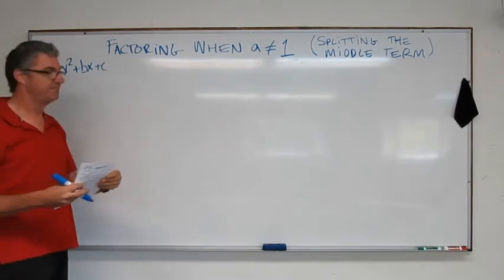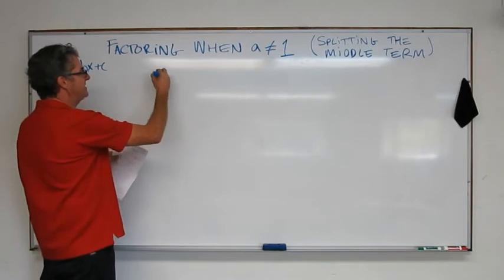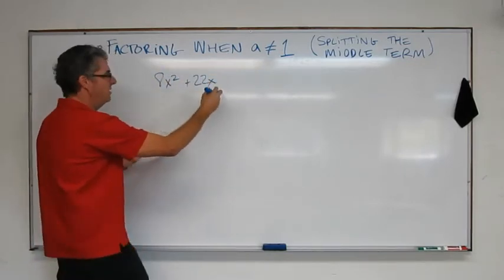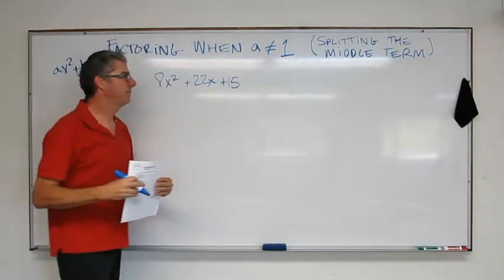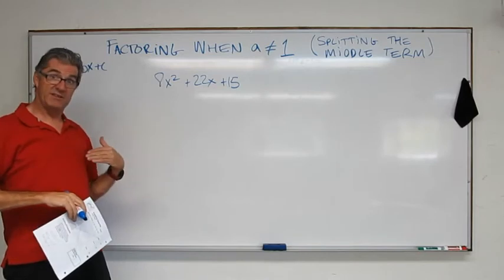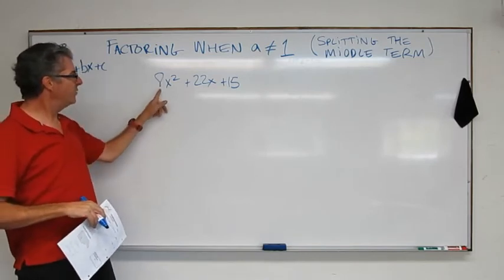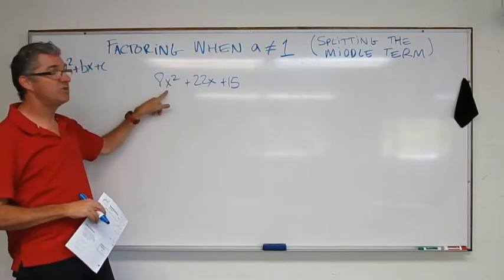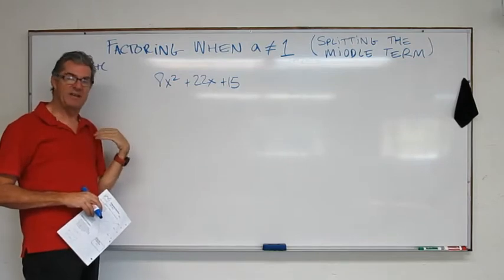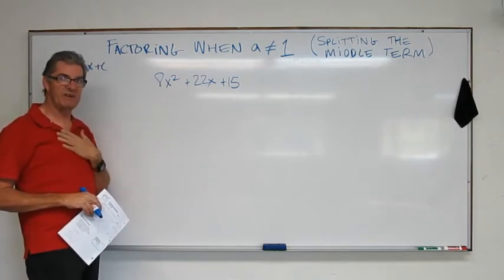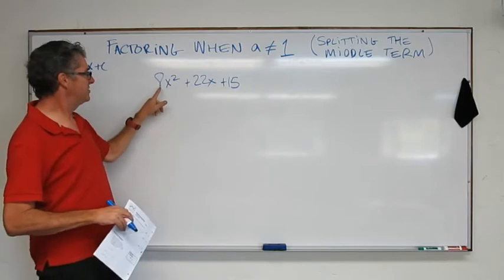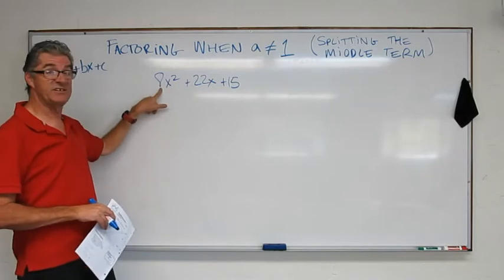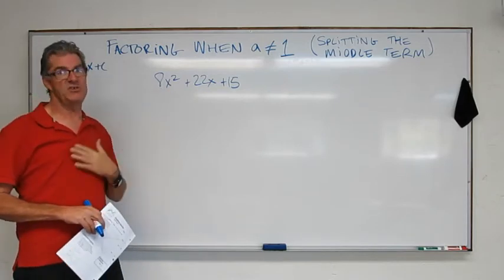Let's take a look at a problem. 8x squared plus 22x plus 15. Okay, so we did one of these before in the last lesson, and we found that we had a common factor in all of these three terms, and we could reduce the a term to 1 by factoring that out, and it made it simpler to do the factoring. Unfortunately, this one doesn't have that. There's no common factor in all three of these, much less a common factor that would get the 8 away from the x squared term. So we can't use that technique.